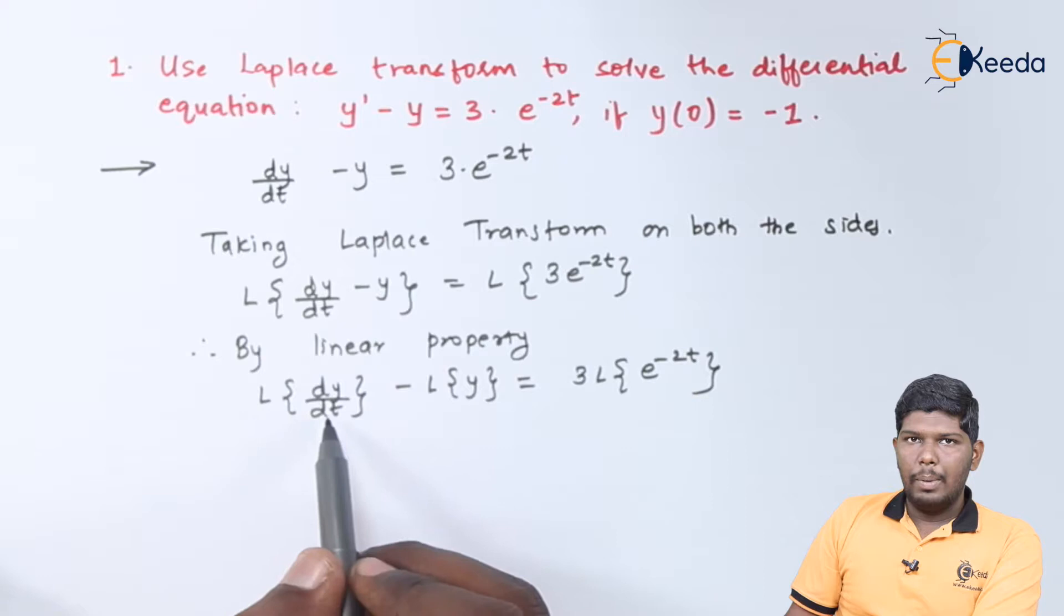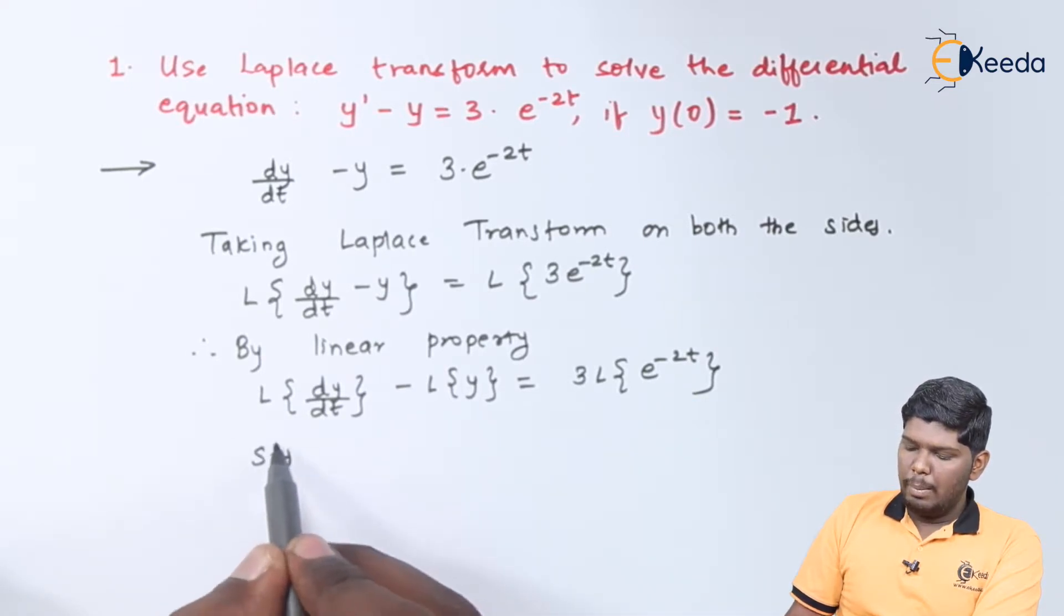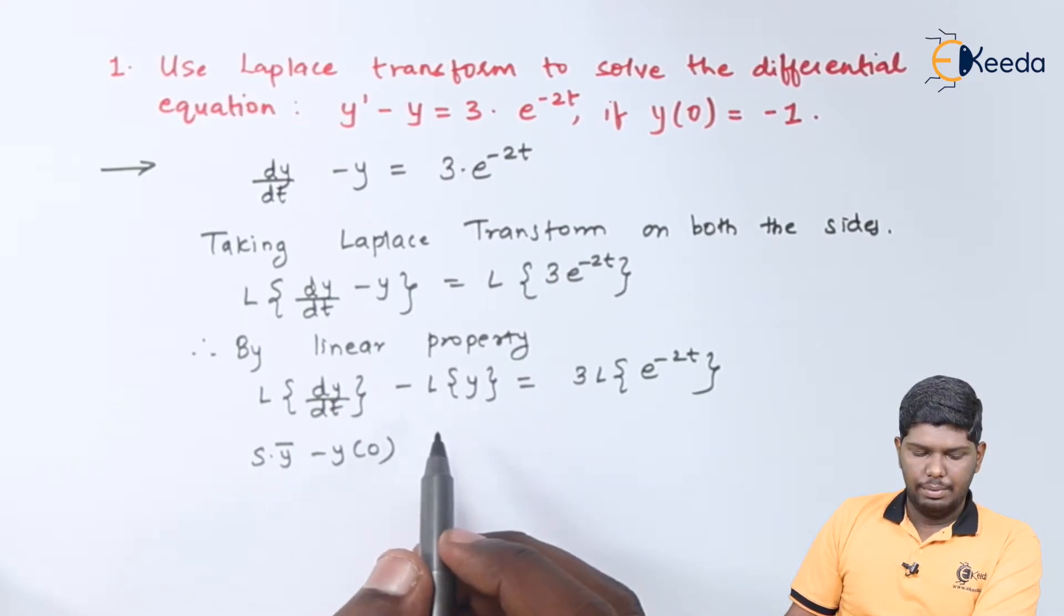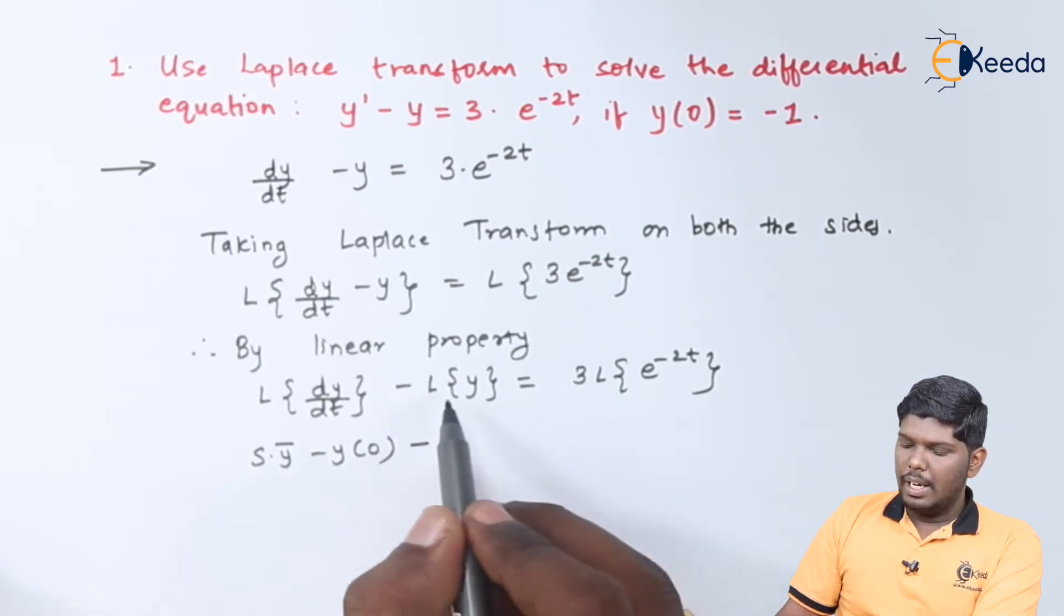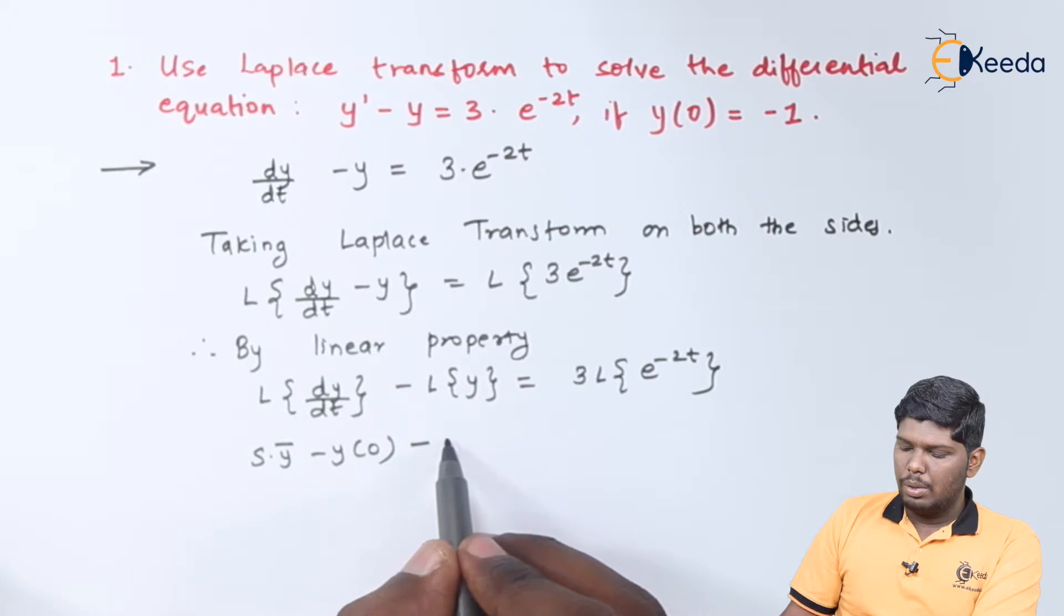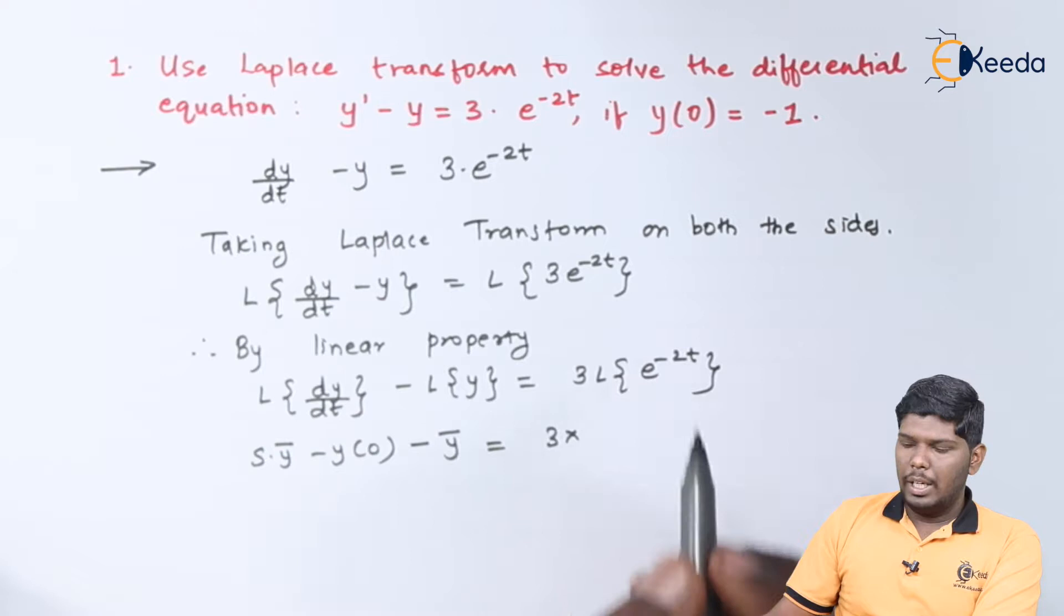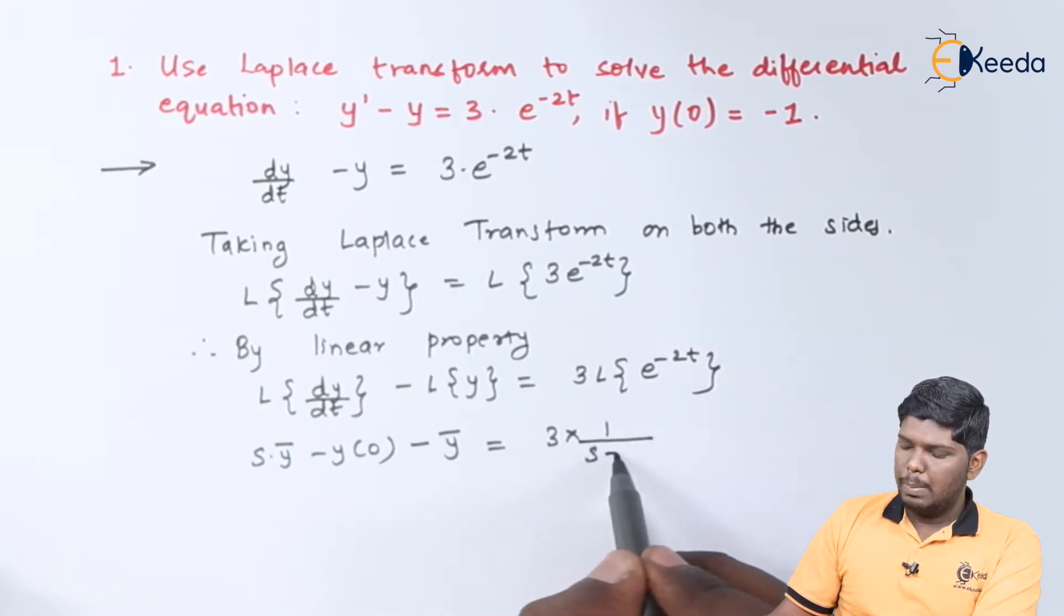Laplace of dy by dt will give you s into y bar minus y of 0. Again, Laplace of y will give you y bar, and on the right hand side we have 3. Laplace of e raised to minus 2t will give you 1 upon s plus 2.